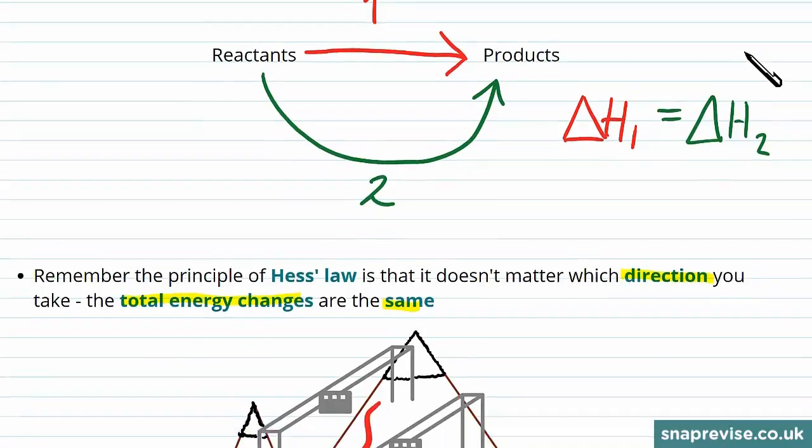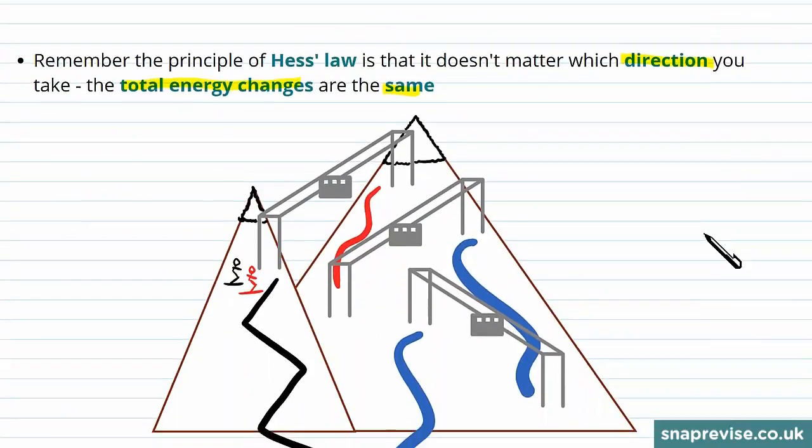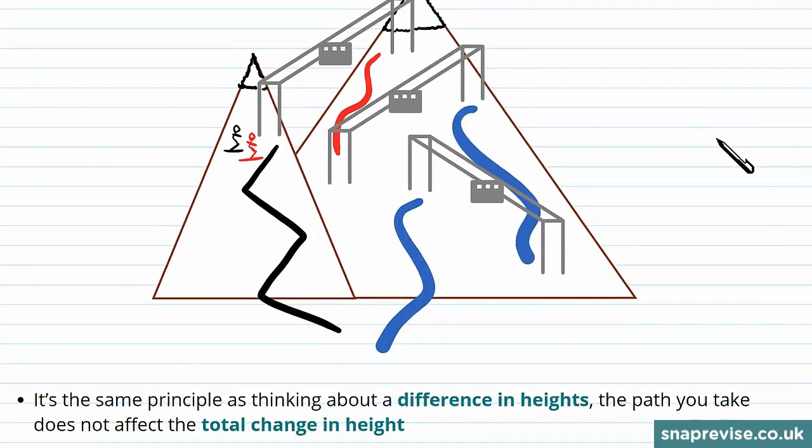If you'd like a way of thinking about this in the real world, you can consider a mountain where instead of thinking about energy changes, instead what we're thinking about is a difference in heights. So if you're on a mountain, the path you take does not affect the total change in height.